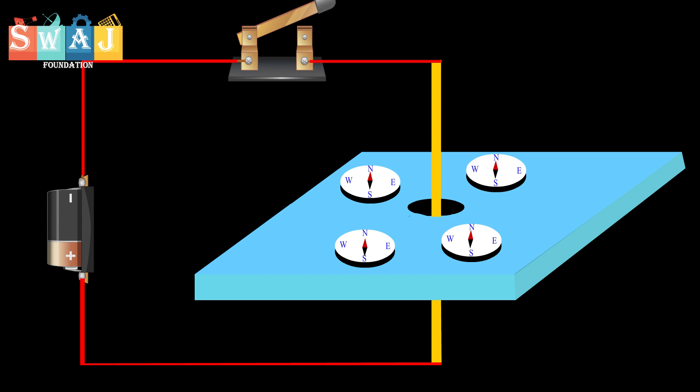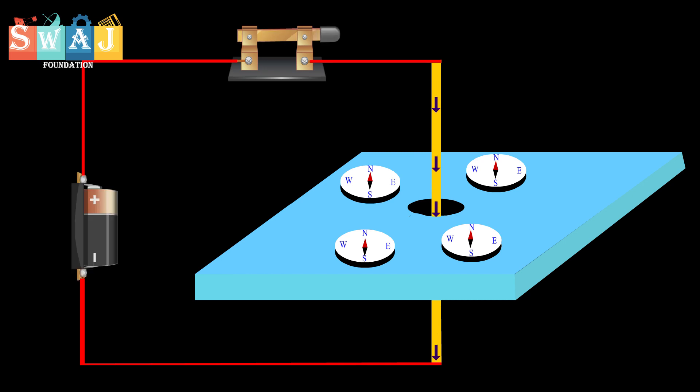Following conclusions can be drawn from the above mentioned experiment. Number one: a magnetic field is set up in the region surrounding a current carrying wire. Number two: the lines of force are circular and their directions depend upon the direction of current.